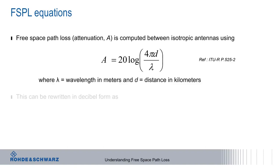We can make our lives even easier by rewriting this equation in decibel form as A equals 32.4 plus 20 log d plus 20 log f, where f is frequency in megahertz. This is a much more convenient way of calculating the free space path loss for most applications, and this is the formula that we'll use in the rest of this presentation.